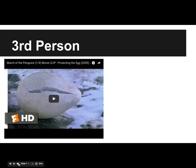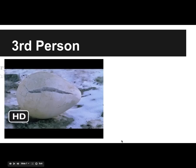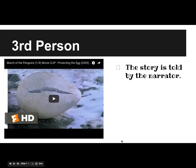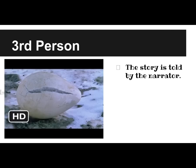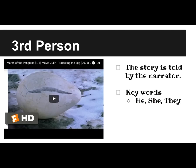The next type of point of view we're going to talk about is third person point of view. In third person point of view, the story is told by a narrator — someone who's not in the story. Where you saw Donkey was talking about himself in the story, this is told by someone outside of the story. Keywords to look for are he, she, or they, because the narrator themselves is not part of the story.